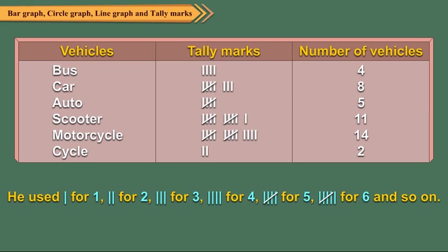Samir was trying to record the number of different vehicles passing through a road between 10 a.m. to 11 a.m. He used tally marks to record the observations. The table shows his observations. The number of times a given observation occurs is called its frequency. For example, the frequency of bus is 4, car is 8, auto is 5, scooter is 11, motorcycle is 14 and that of cycle is 2.